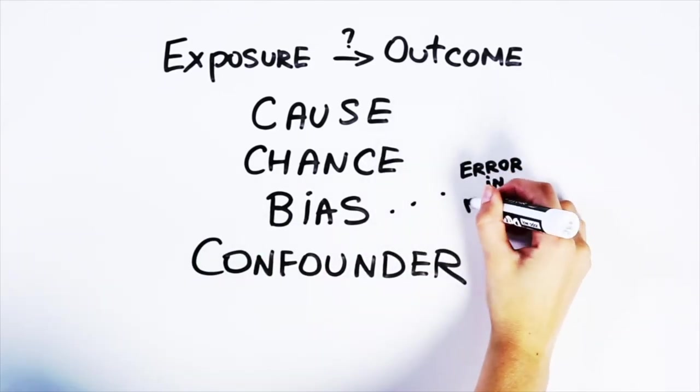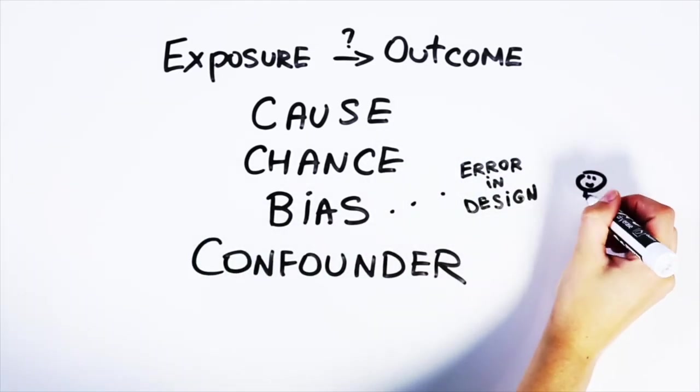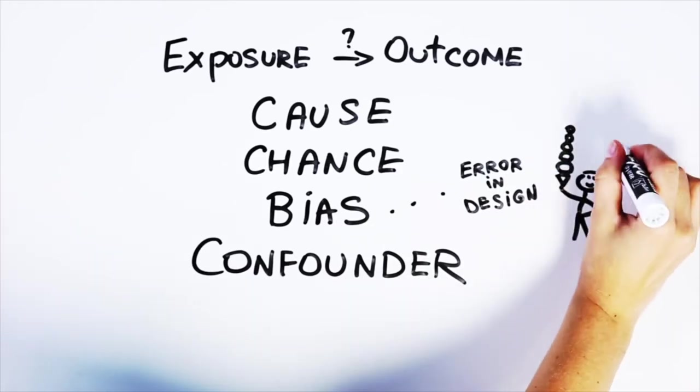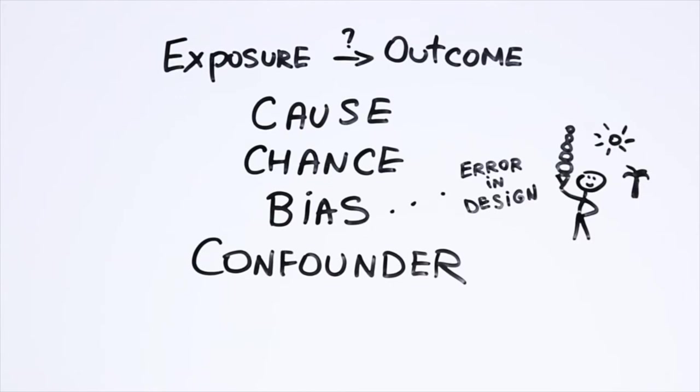Bias can come about because of errors in how a study is designed. For example, if we observe only people who eat a lot of ice cream and live in really hot, sunny areas, and don't include anyone else that doesn't eat so much or live elsewhere, the association between ice cream eating and getting sunburned will seem very strong. In other words, the results will be misleading. They'll be biased toward a particular, and in this case, wrong conclusion.